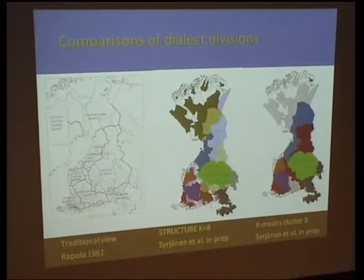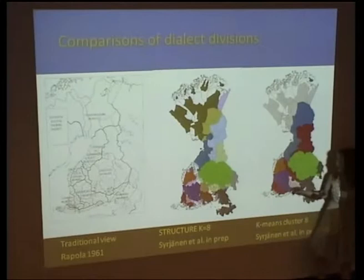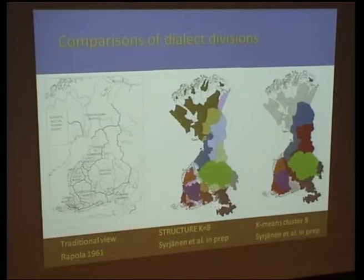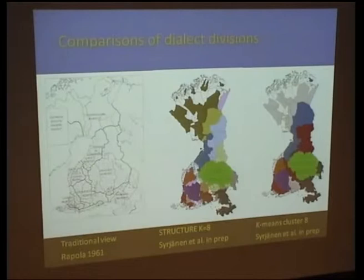We also ran a k-means cluster analysis, which is widely used in linguistics, and created 8 populations with it. The map shows they are quite similar to the STRUCTURE results. However, we would underline that STRUCTURE is nicer in this regard because k-means assumes borders between dialects are very sharp, while STRUCTURE allows for gradual change from one population to another.